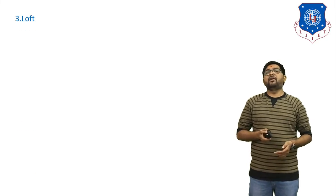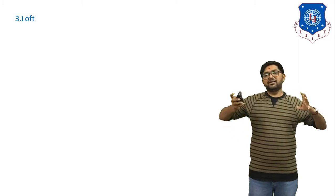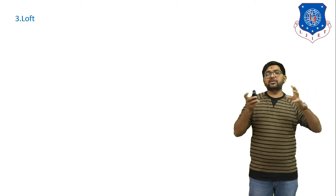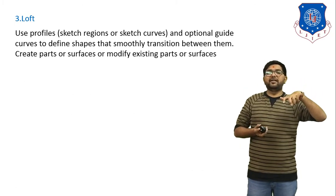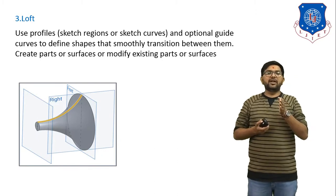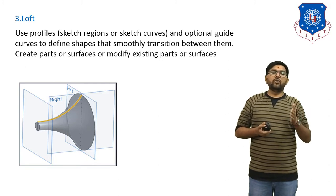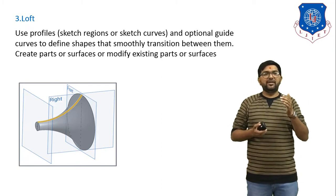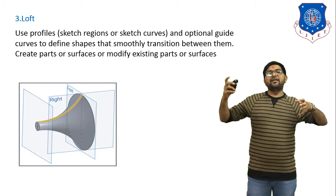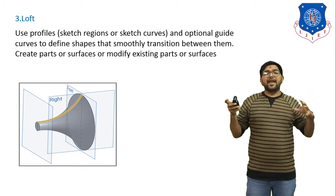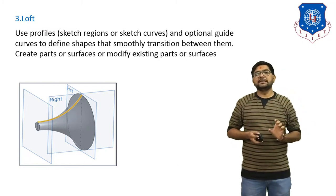Next is loft. If we have two types of cross-sections — for example, a circle and a square — we combine these two surfaces by their periphery, and the resulting 3D object is called a loft. We use a profile sketch and optional guide curves to define a shape that smoothly transitions between them, creating parts or surfaces or modifying existing ones. In the figure, a small circle and a large circle are connected along their periphery to generate a pyramid-like shape.